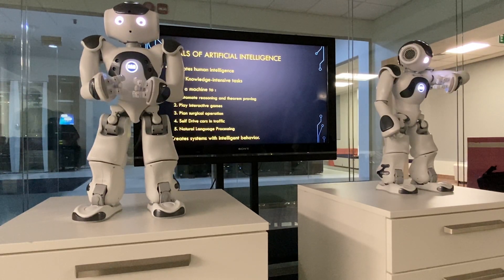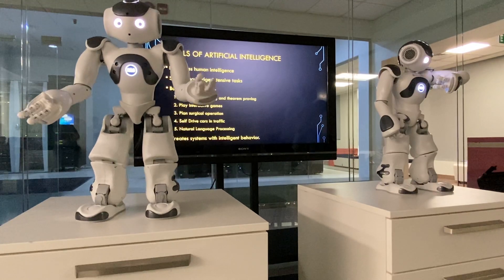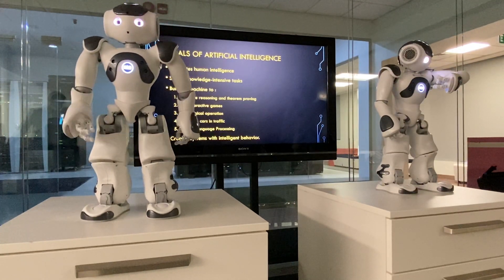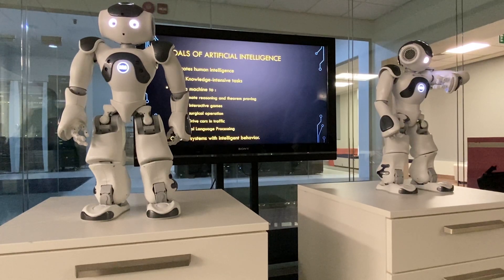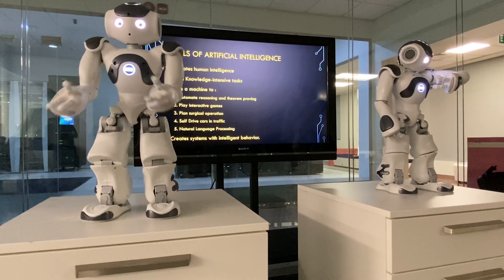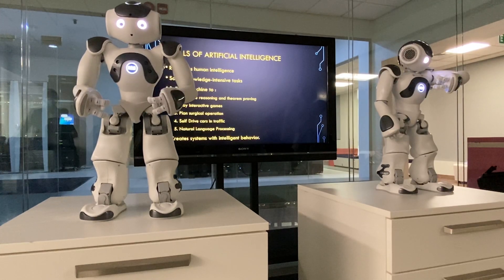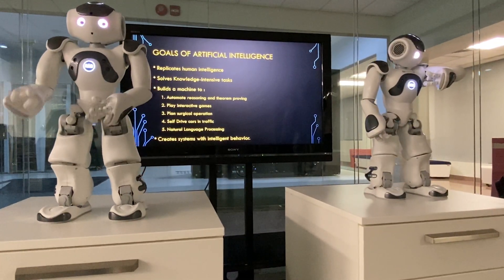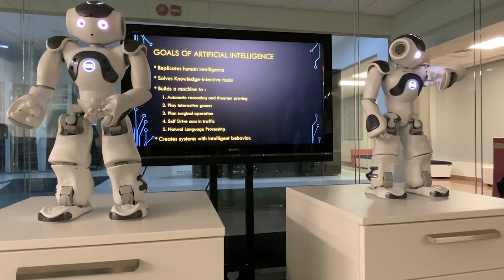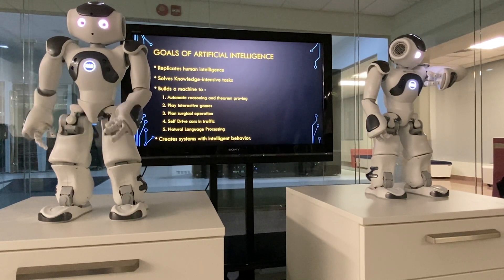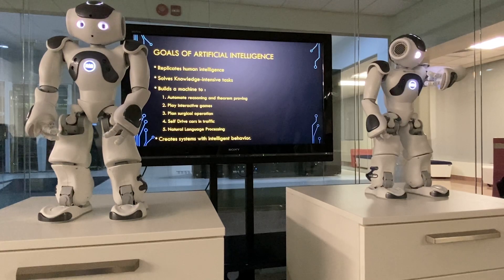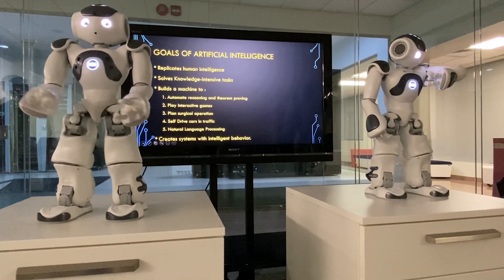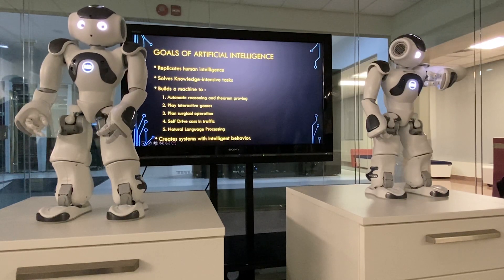Robots are able to perform tasks given by a human. They have sensors to detect physical data from the real world such as light, heat, temperature, movement, sound, bump, and pressure. They have efficient processors, multiple sensors, and huge memory to exhibit intelligence. In addition, they are capable of learning from their mistakes and can adapt to new environments.